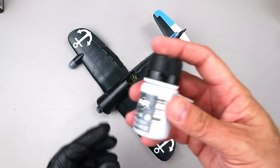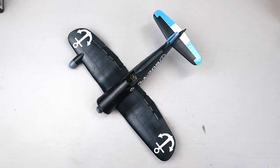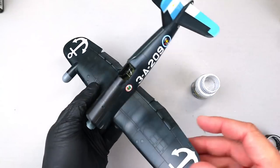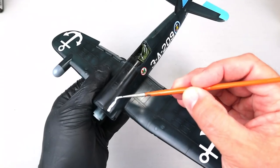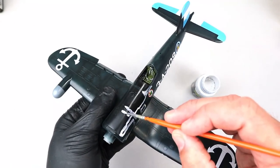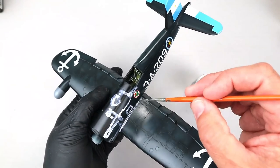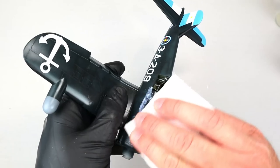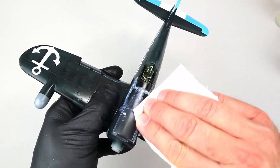To bring out the panel line and rivet detail, I used AK's panel liner for black surfaces. It's a light gray color. I was initially afraid that it would be a bit stark, but by applying it more sparingly to only the panel lines and rivets, and then removing most of the wash after it dried, it provided just the right amount of contrast that I was after.